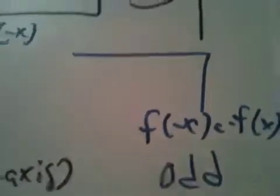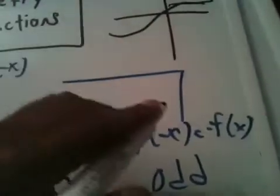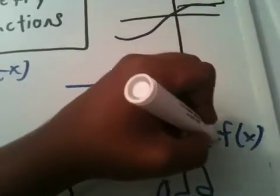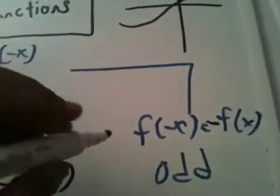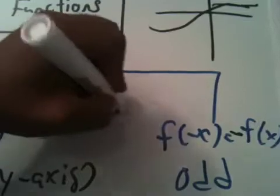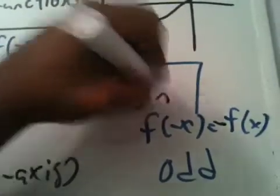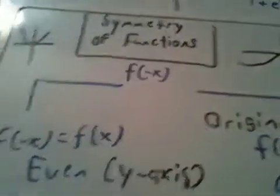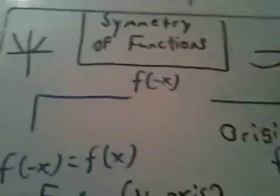But if we get f of negative x equals minus f of x, that should be a minus sign, then the function is symmetric about the origin. This is a way in analyzing functions, this is just one of the properties that you use in what's called the big ten.